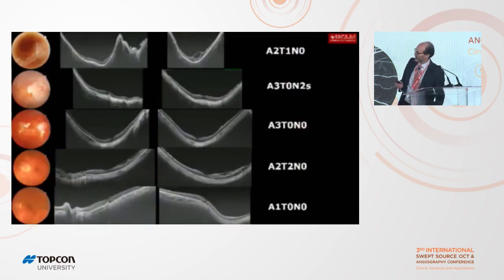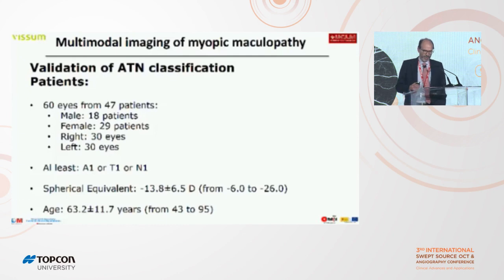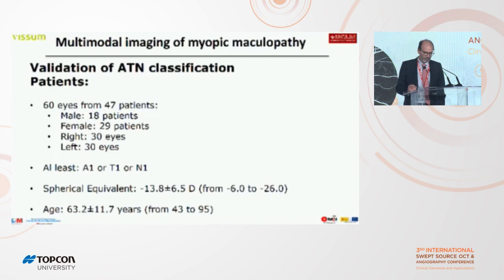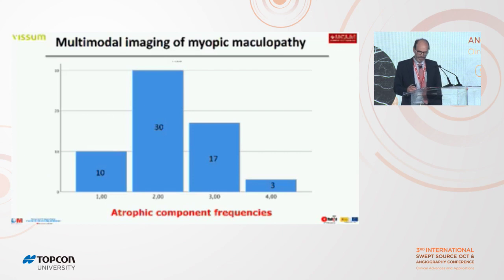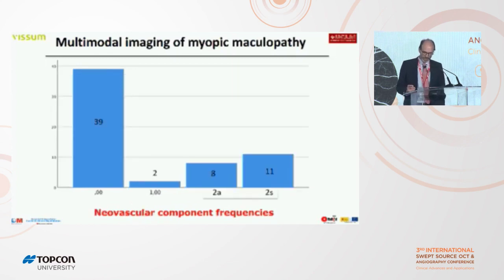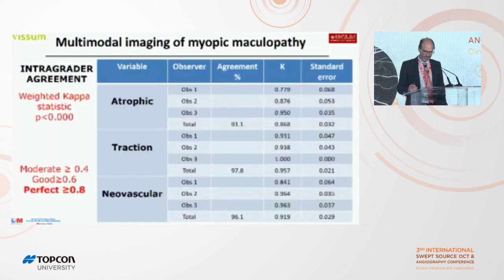We performed this study in 60 eyes, 18 male patients, 30 right eyes, all at least A1, T1, or N1 in every case. Mean spherical equivalent was minus 13 diopters and mean age was 63. These are the frequencies of the atrophic component, the traction component, and the neovascular component across the 60 patients.